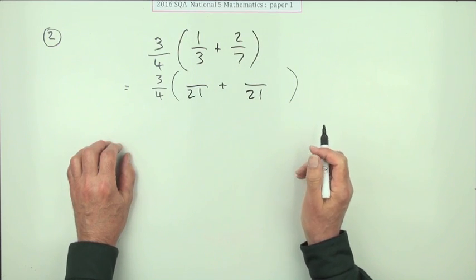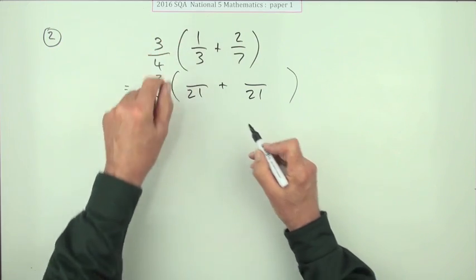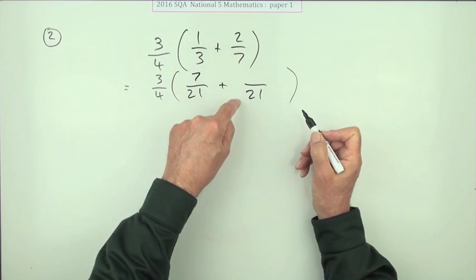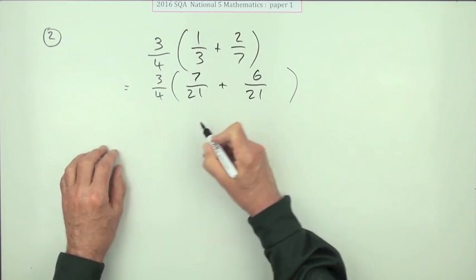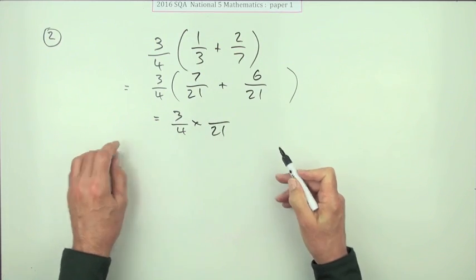Change the denominator, change the top. That's seven times bigger, seven ones are seven. That's three times bigger, three twos are six. So out of 21, if I've got seven of them and six of them, I've got 13 of these.